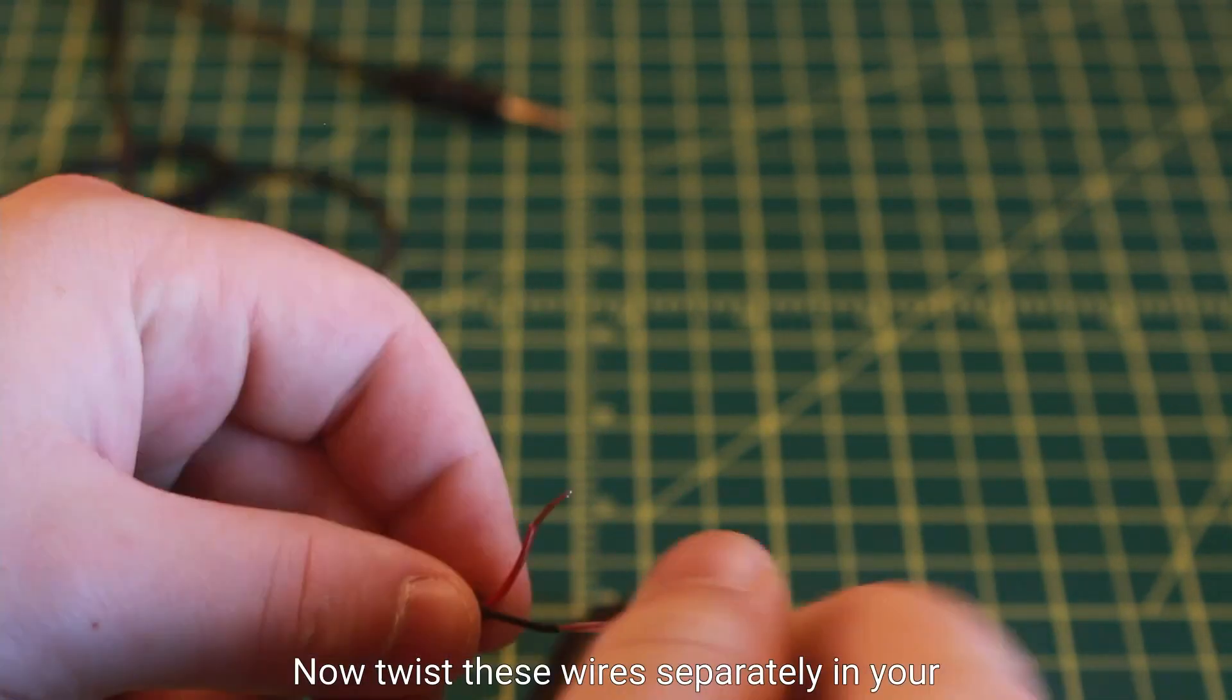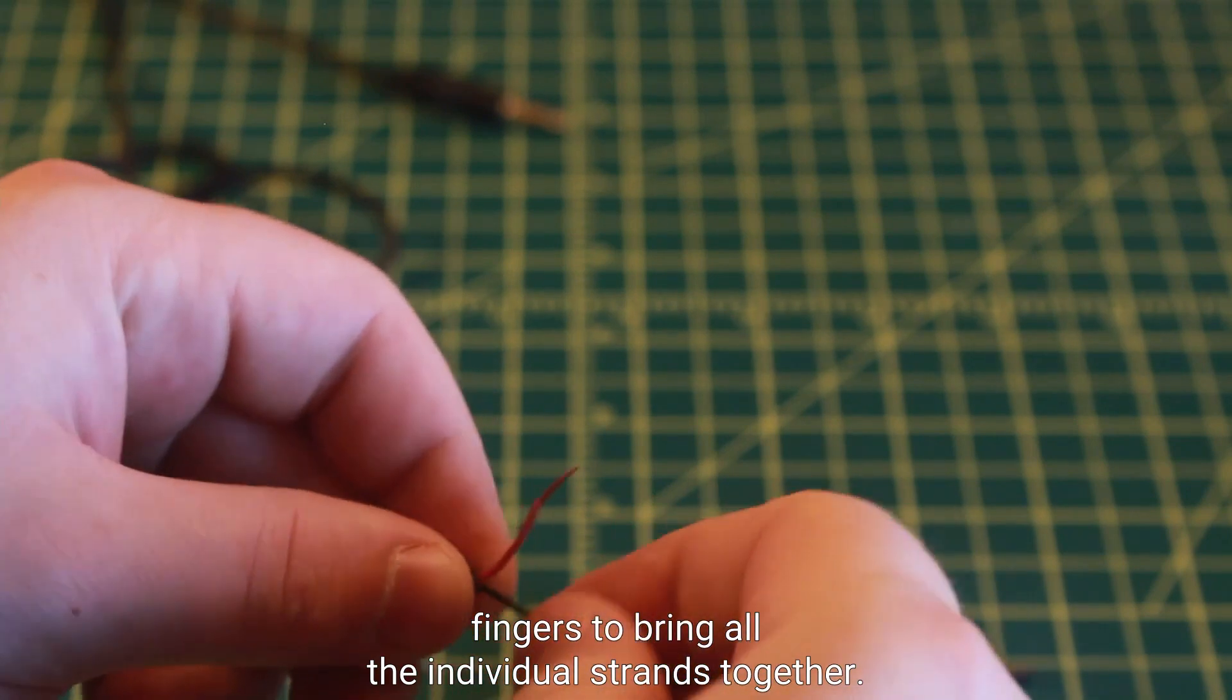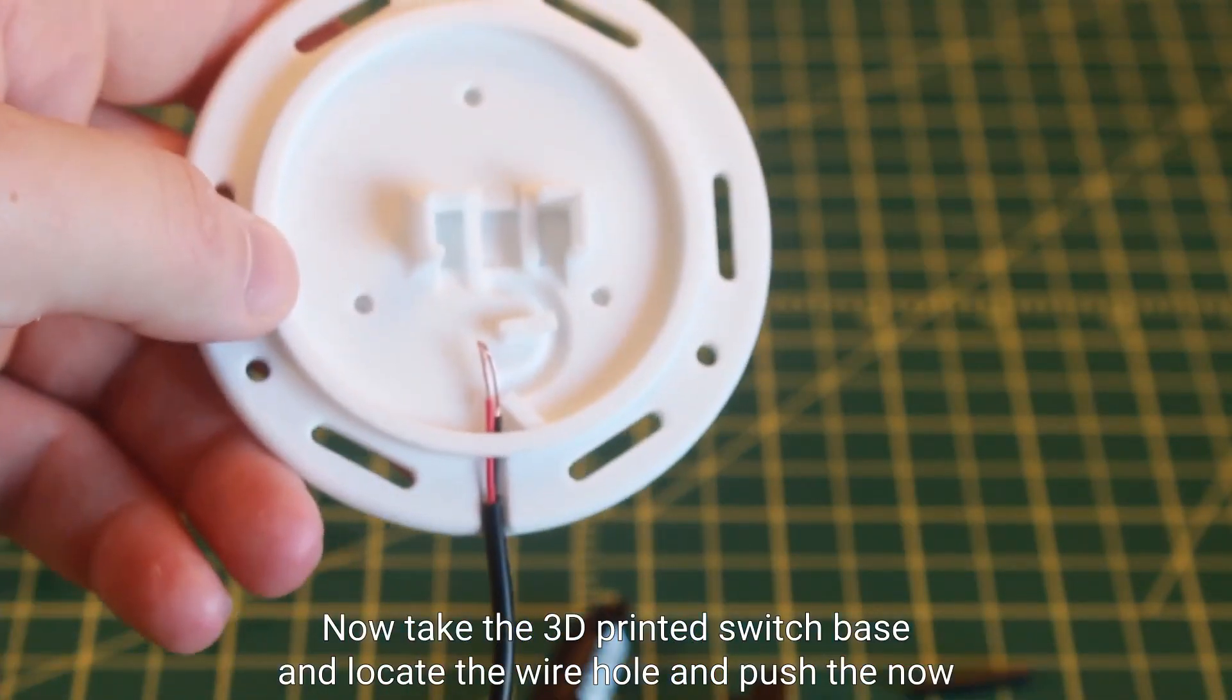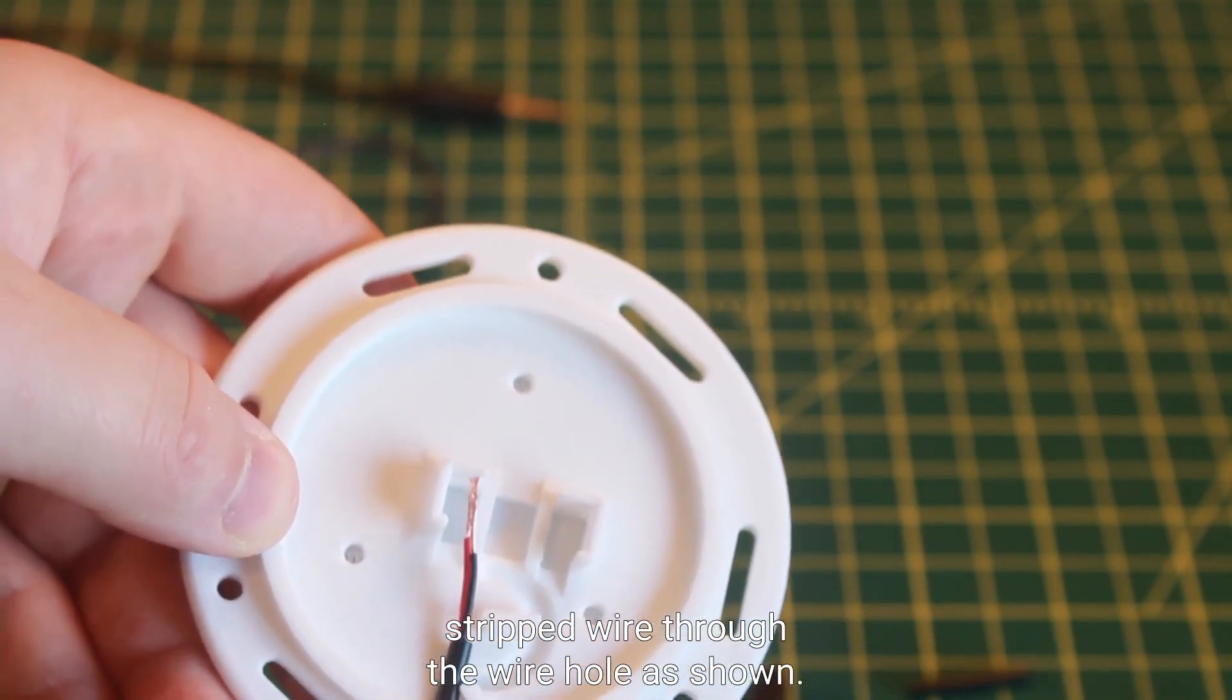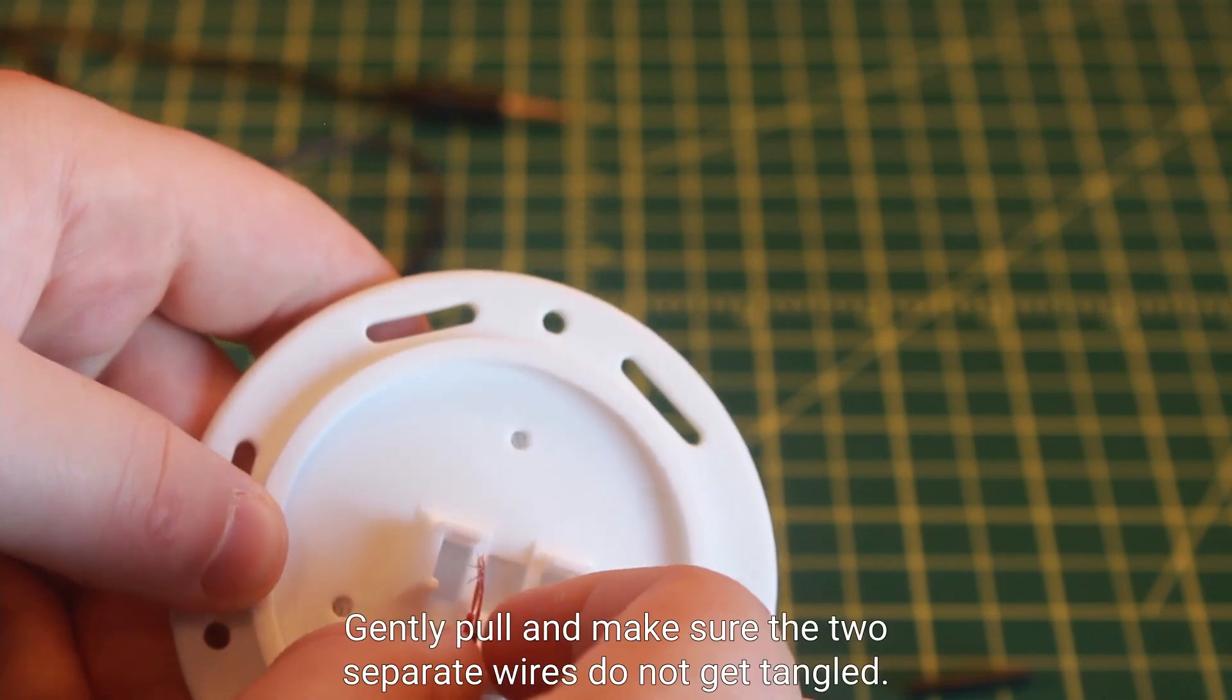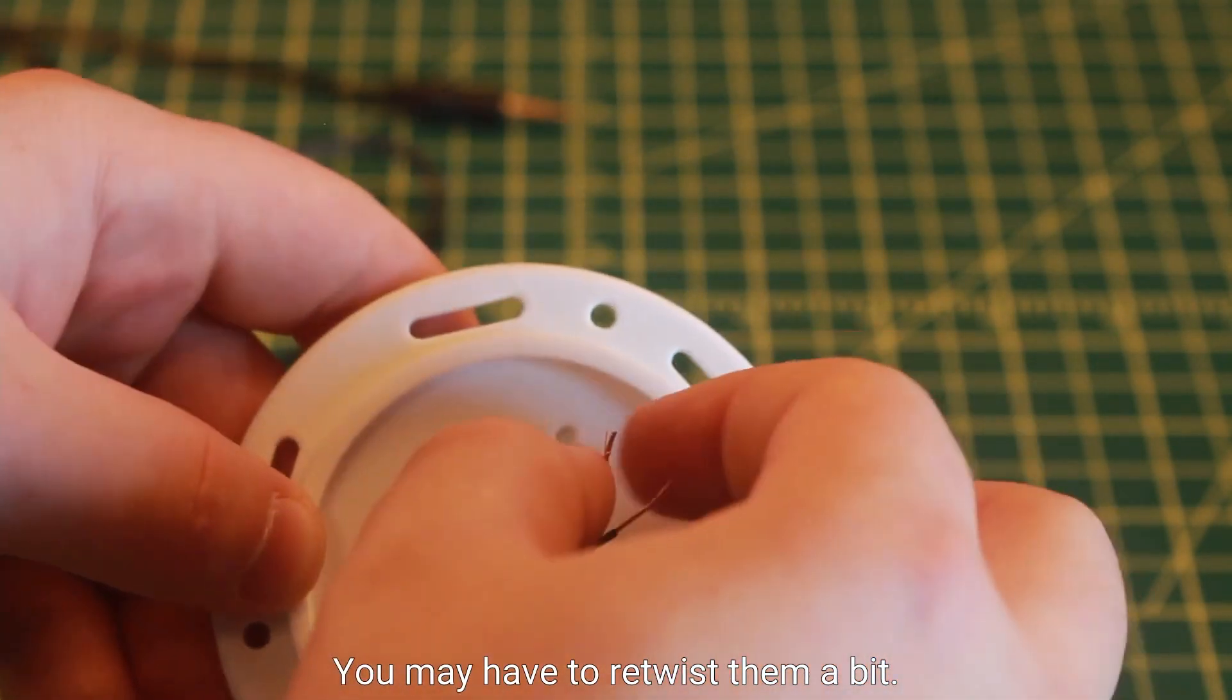Now twist these wires separately in your fingers to bring all the individual strands together. Now take the 3D printed switch base and locate the wire hole and push the now stripped wire through the wire hole as shown. Gently pull and make sure the two separate wires do not get tangled. You may have to retwist them a bit.